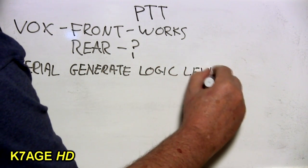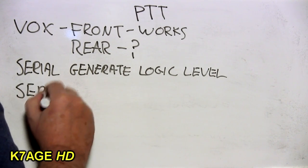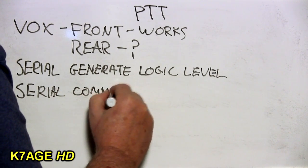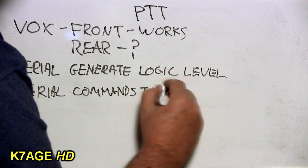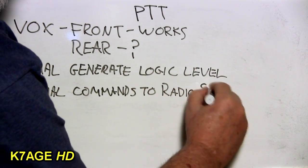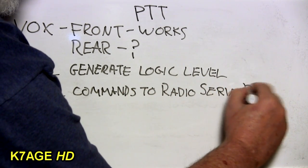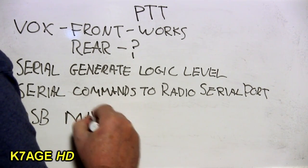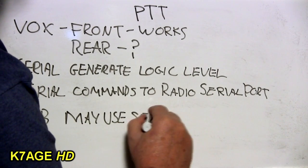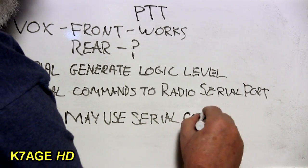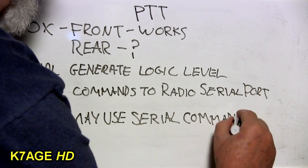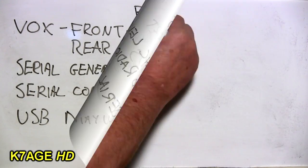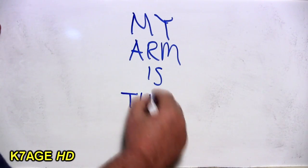If you're going into the front the vox will work. If you're going into the rear it may or may not work. If it doesn't work you can use a serial port either from the computer or from a USB to serial port dongle to generate a logic level through a switch circuit to interface to the push-to-talk circuitry. And the newer radios will deal with push-to-talk through commands through the serial line. Not logic level but command. So for now 73 from K7AGE.